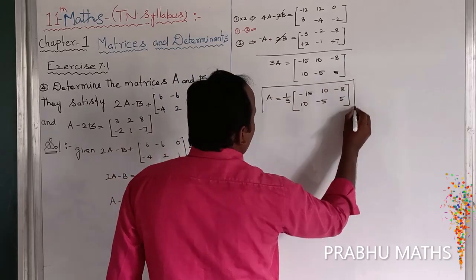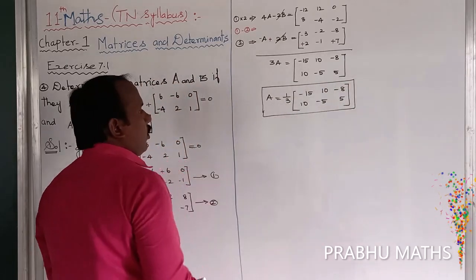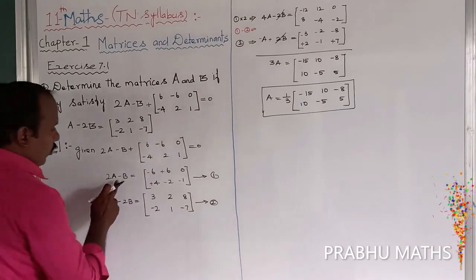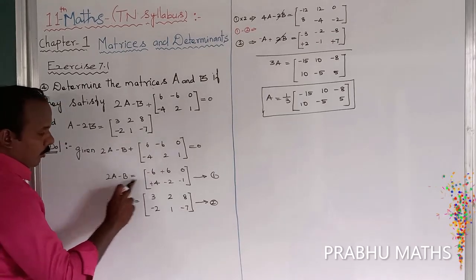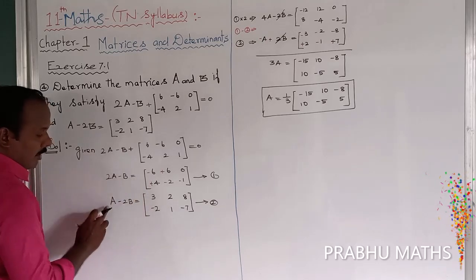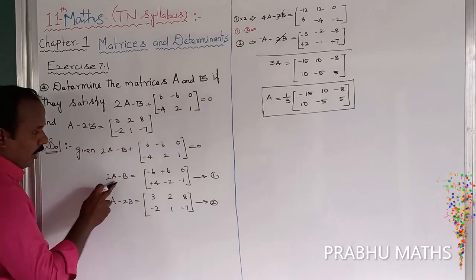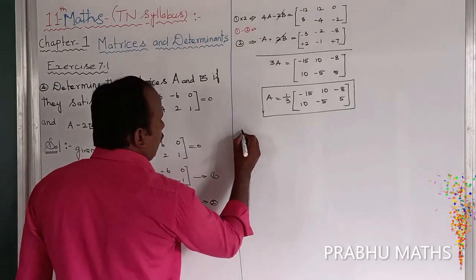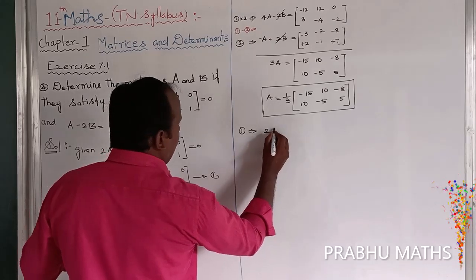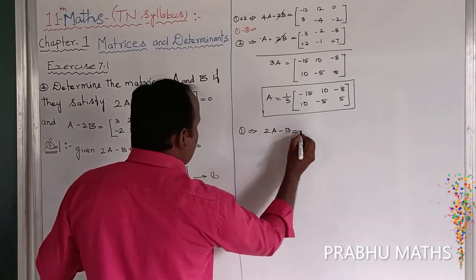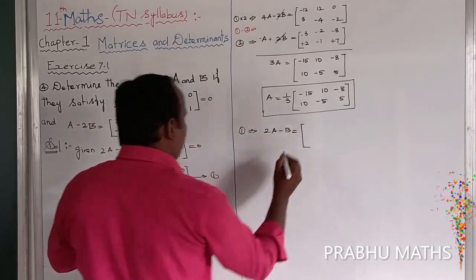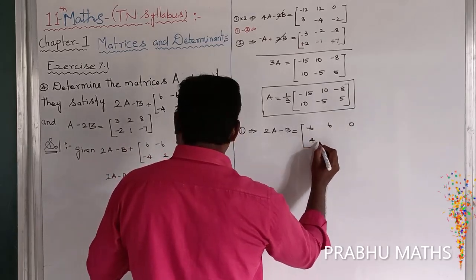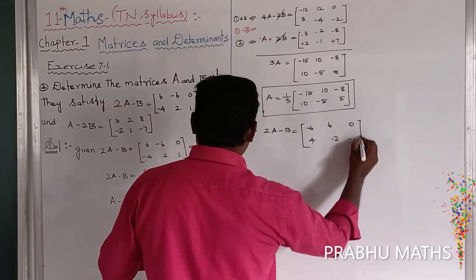Next, to find B value. So to cancel A, equation number 1 is directly applied: 2A minus B is equal to: minus 6, next one 6, next one 0, next one 4, next one minus 2, next one minus 1.